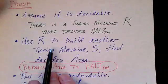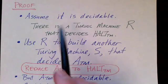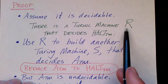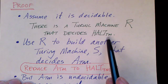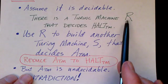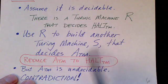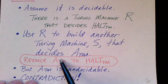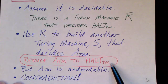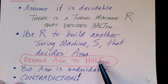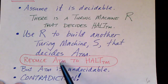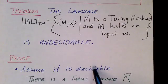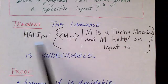Here's the logic of our proof. We assume that this language is decidable — in other words, we assume that there is a Turing machine, and we'll call it R, that can decide HALT_TM. Then we're going to use this hypothetically existing Turing machine to build another Turing machine, we'll call that one S, that will decide the acceptance problem for Turing machines. We're reducing the acceptance problem of Turing machines to the halting problem for Turing machines, and it's a pretty straightforward reduction. But we already know that the acceptance problem for Turing machines is undecidable, so we reach our contradiction, and we can conclude that our assumption was incorrect — the language HALT_TM is undecidable.